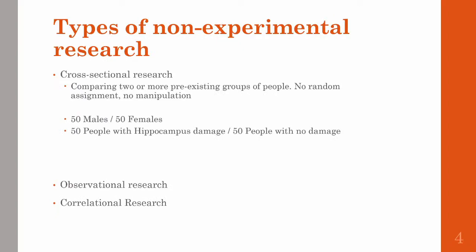There are different types of non-experimental research, and we'll touch on three here. The first type is cross-sectional research, where you compare two or more groups that already meet a certain criteria. You don't randomly assign people and you don't manipulate anything.